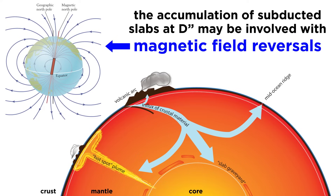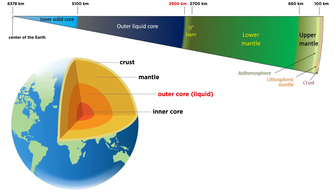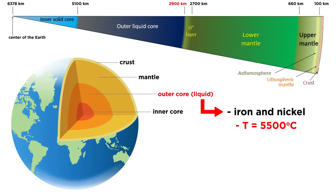The accumulation of subducted slabs at D'' also has implications for triggering magnetic field reversals, but before we get there, we must discuss the core. At 2,900 kilometers, the D'' layer gives way to a liquid outer core composed mainly of iron and nickel.